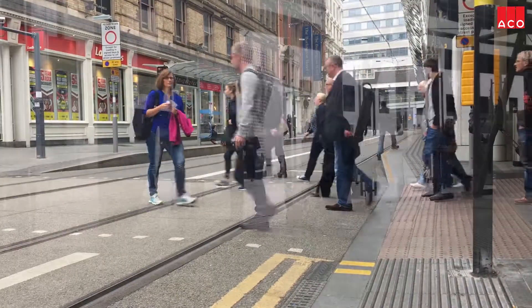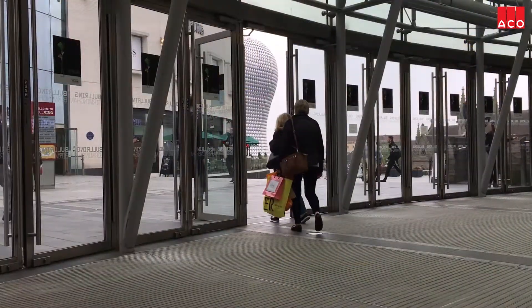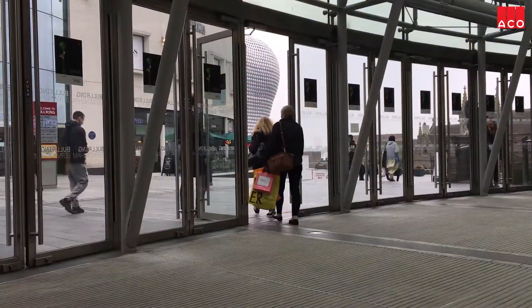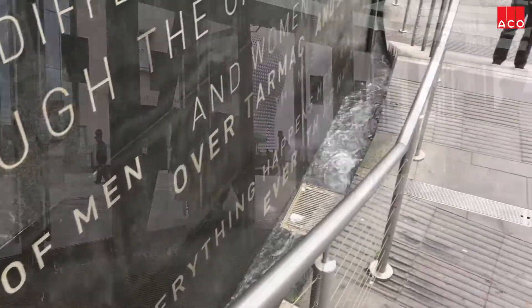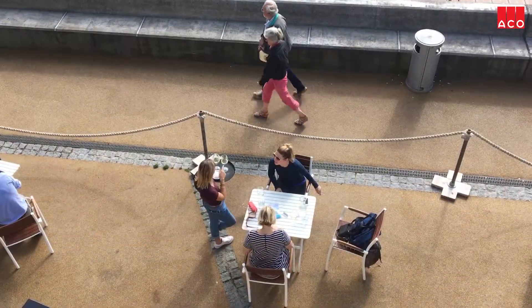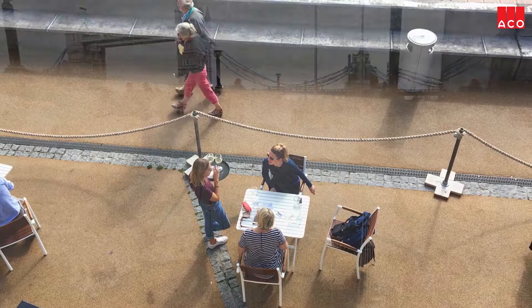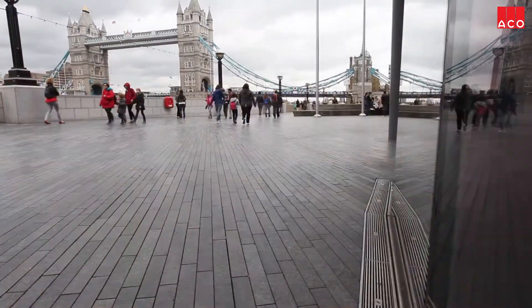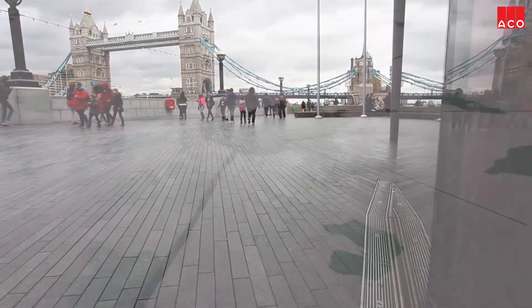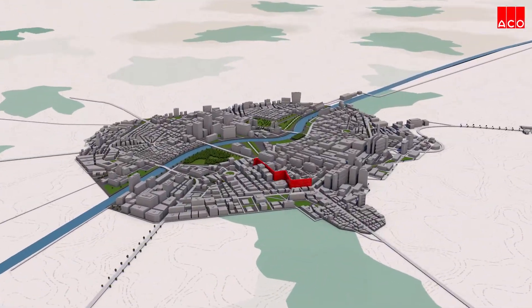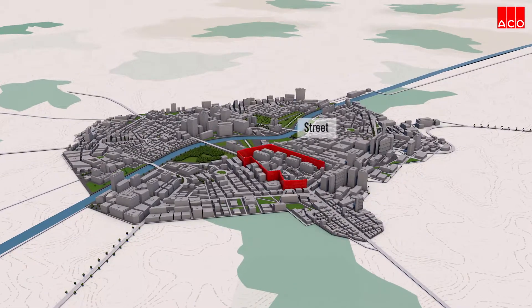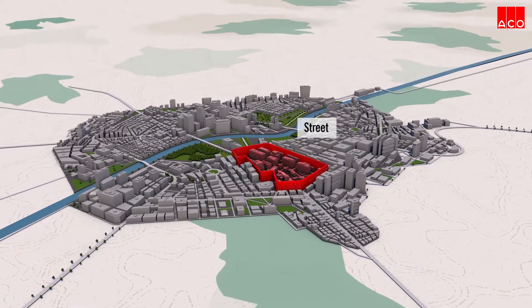Urban design is defined as the design of the spaces between buildings, and surface water is a key element to be managed — but also one that can be used to influence the characteristics of these spaces.